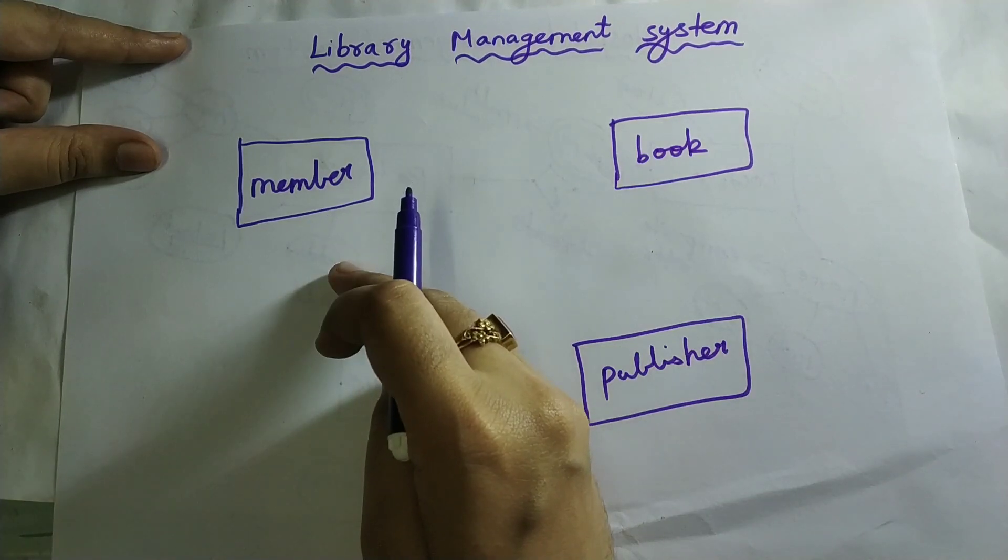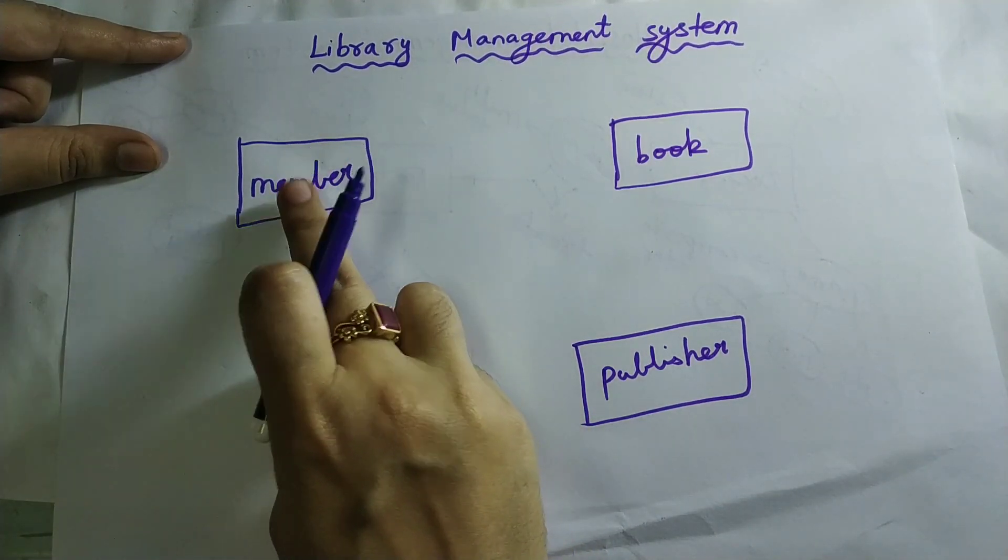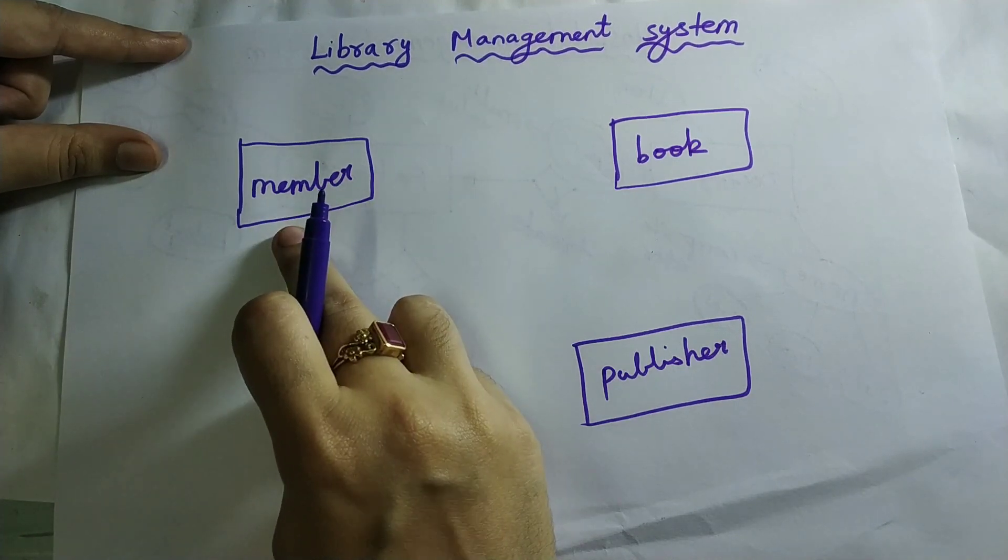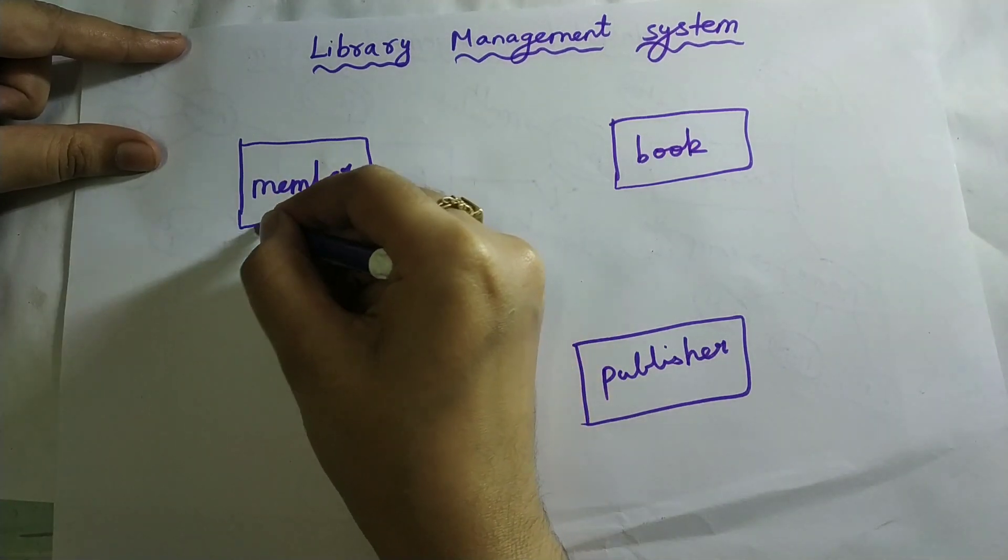Next, attributes. Attribute is characteristics of an entity. Now member is the entity, so member's characteristics is the attribute. I should write the attributes inside an oval shape.